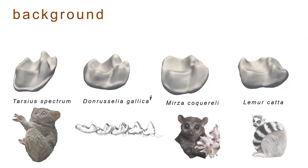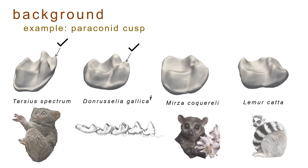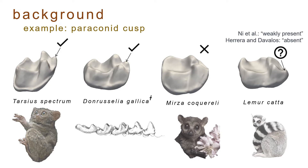In addition to their functional significance, cusps and their character states are also commonly used for phylogenetic analyses. For example, the paraconid is often utilized in character matrices to determine the phylogenetic affinities of primates, since the paraconid is variably present among prosimians. While it's relatively straightforward to categorize the paraconid as present or absent for some taxa, qualitative characterizations are prone to differ — like in Lemur catta, where the paraconid has been described as both absent and weakly present.